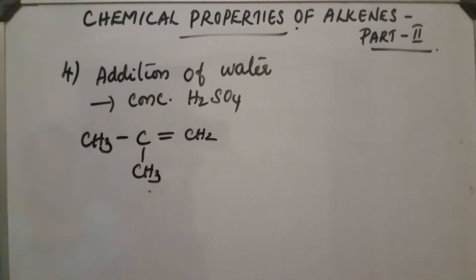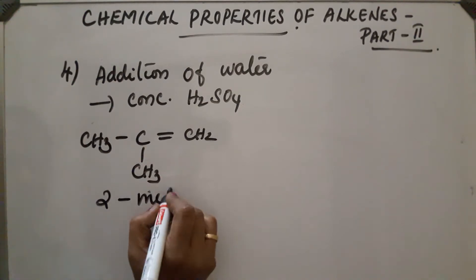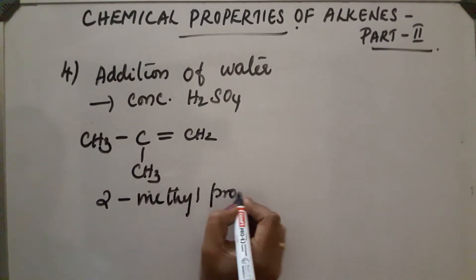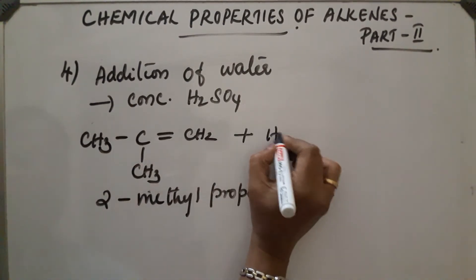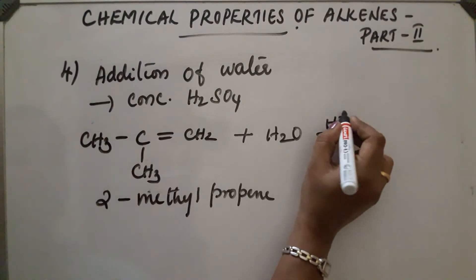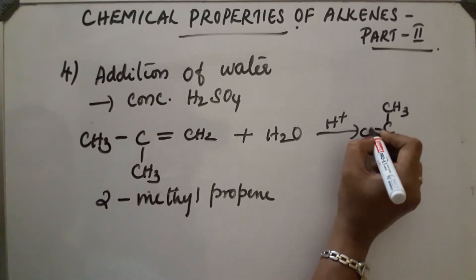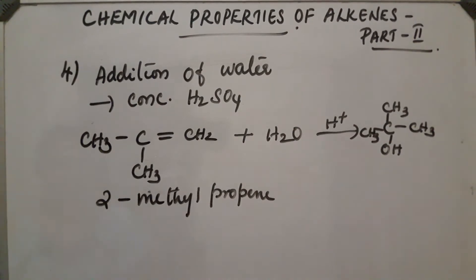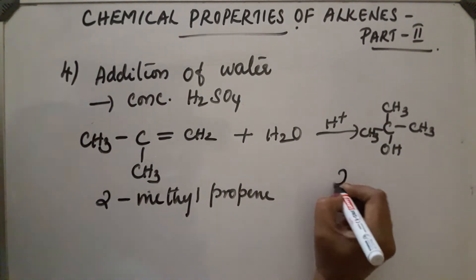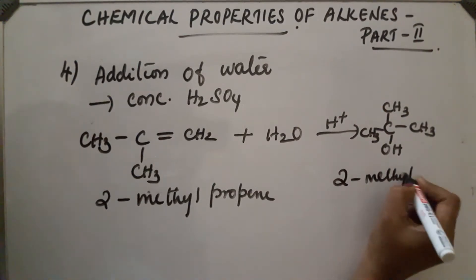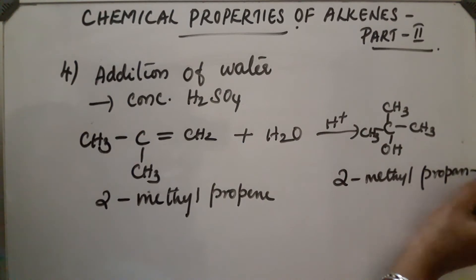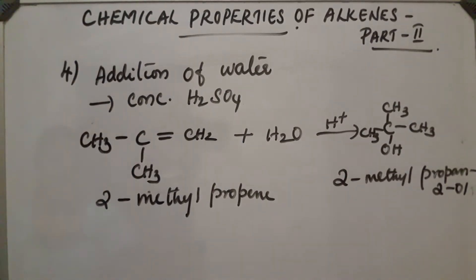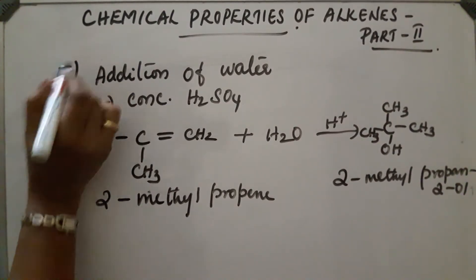The product obtained will be an alcohol. The reactant is 2-methylpropene. 2-methylpropene on reaction with water in the presence of an acid gives an alcohol: CH₃–C(OH)–CH₃, that is 2-methylpropan-2-ol. The OH group is added at the second position. This is the fifth reaction.